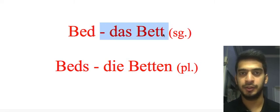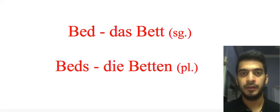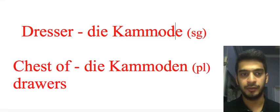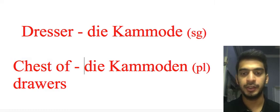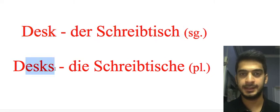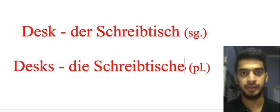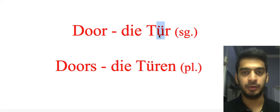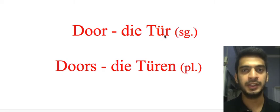'Bed': 'das Bett' — singular; 'die Betten' — plural, with N at the end. 'Dresser': 'die Kommode' — singular; 'die Kommoden' — plural, extra N at the end. 'Desk': 'der Schreibtisch' — singular; 'die Schreibtische' — plural, extra E at the end. 'Door': 'die Tür' — singular; 'die Türen' — plural. In both words we have U with umlaut, pronounced 'ü'.